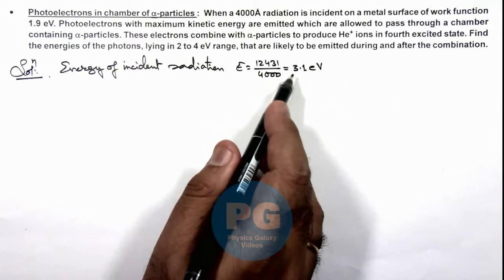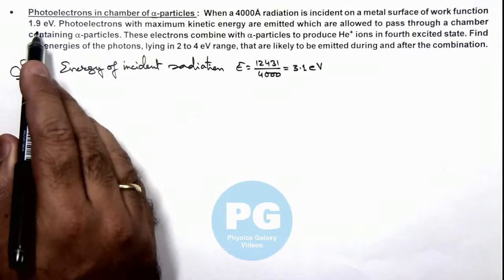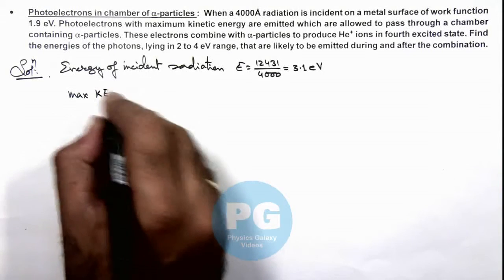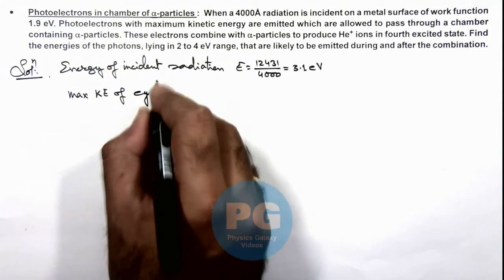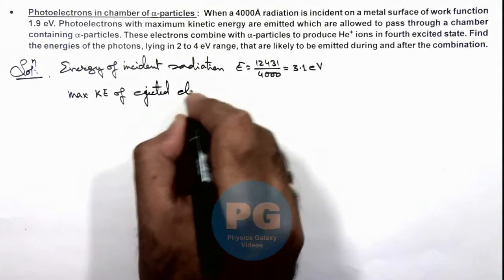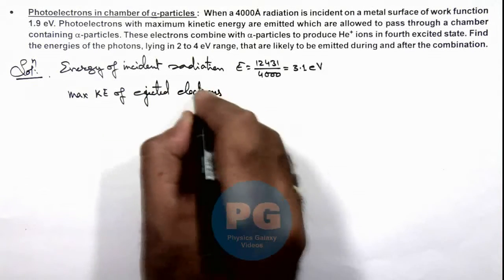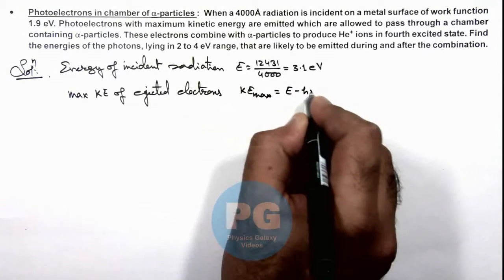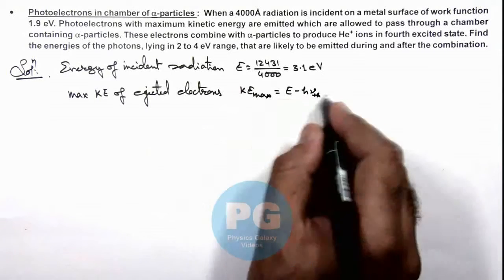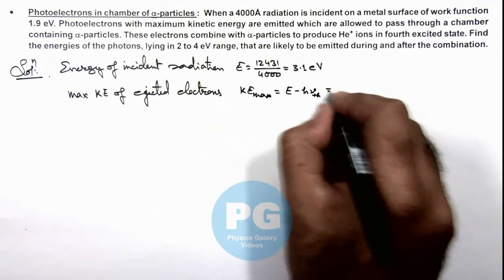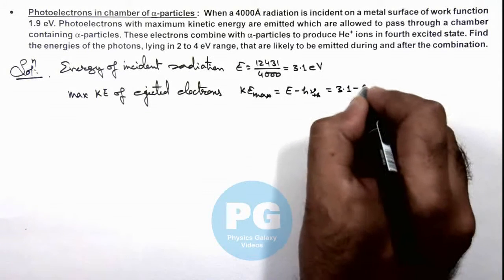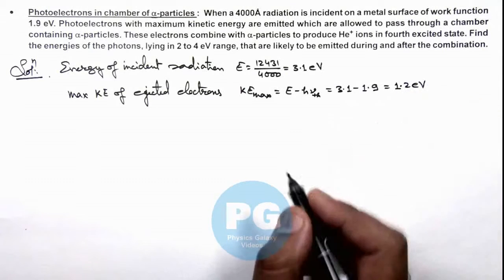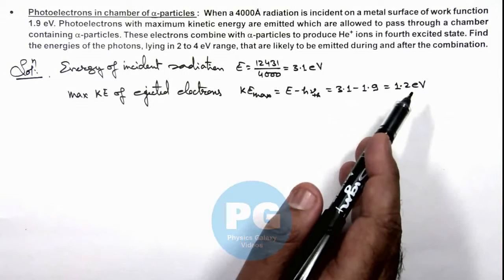These photons fall on a metal surface having work function 1.9 electron volt. We can write down the maximum kinetic energy of the ejected electrons. KE_max can be written as E minus the work function. So this is 3.1 minus 1.9, which is equal to 1.2 electron volt. This is the kinetic energy of the fastest electrons.